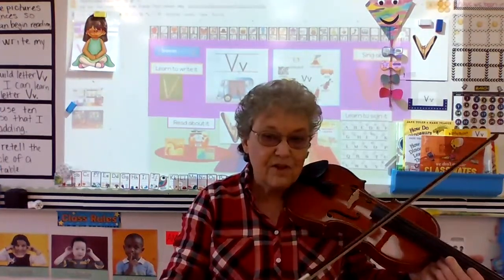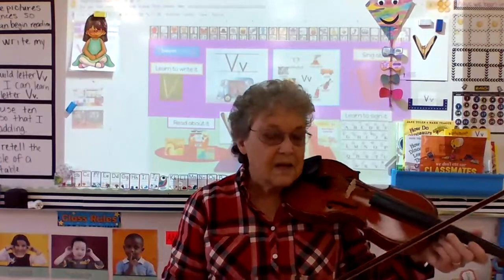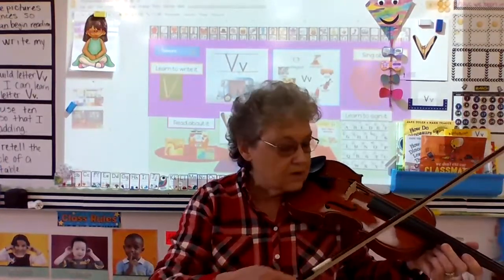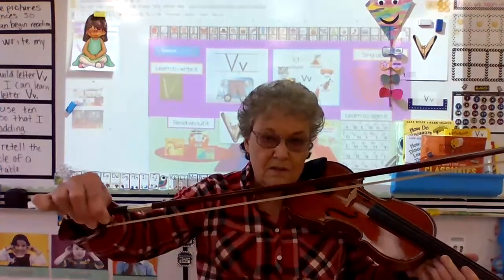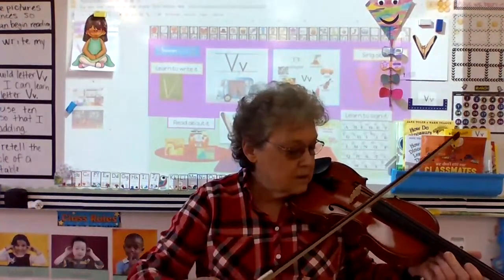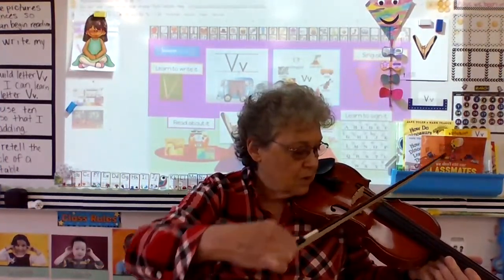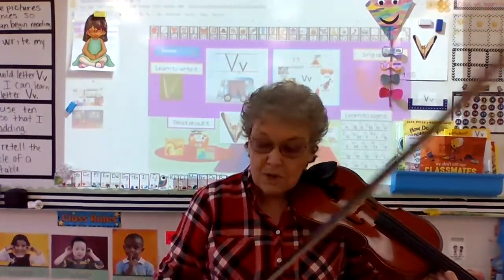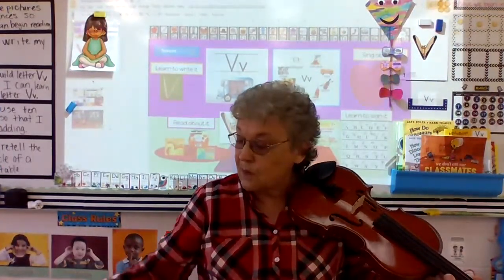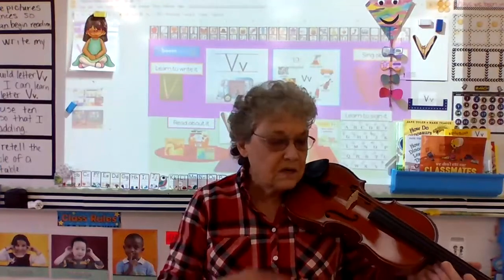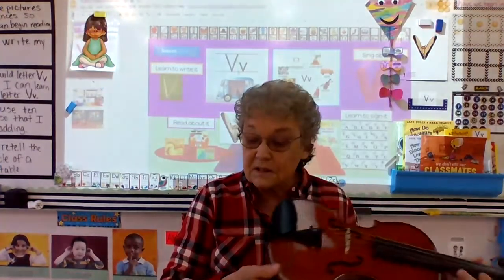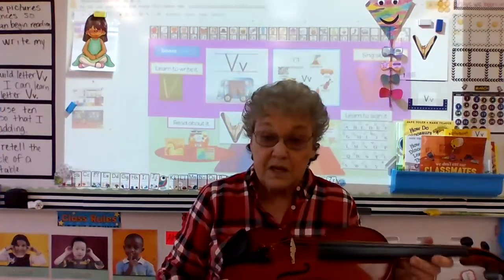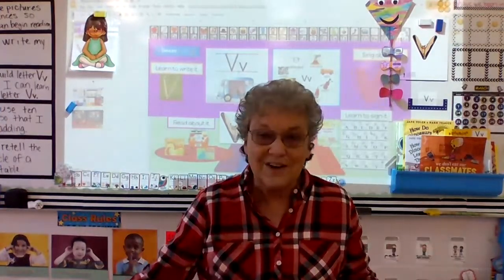Usually a violin is played in an orchestra or when they're playing beautiful music that maybe doesn't even have any words — you'll just hear the beautiful violin playing. When we see it or hear it with bluegrass music, we call it a fiddle. It's exactly the very same instrument with strings and a bow, but played a different way. Bluegrass music is a little faster, and most of the time it probably even has words that you can sing along with it.